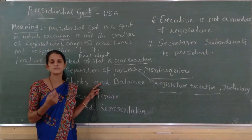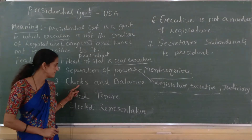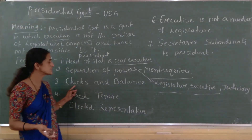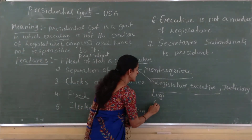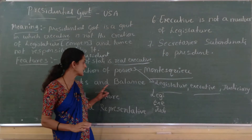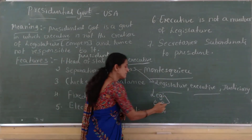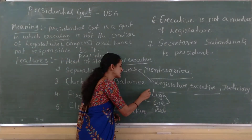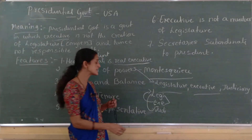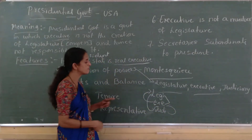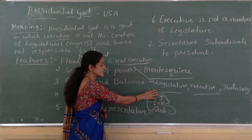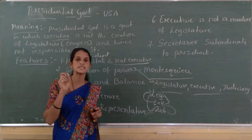Checks and balances is another important feature of presidential form of government. According to the check and balance system, legislature, executive, and judiciary are the three organs of government. The legislature checks the power of the executive, the executive checks the power of the legislature, and the judiciary checks the power of both legislature and executive. By checking these powers, the judiciary tries to bring balance between the three organs of government.